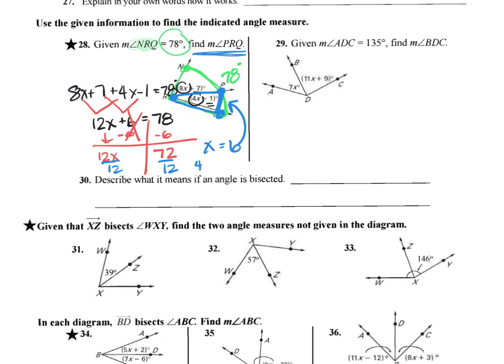So that makes 4 times 6 minus 1. Again, we're using this right here, 4x minus 1. And that calculation is going to be 24 minus 1, 23 degrees. The measure of angle PRQ equals 23 degrees. That is the answer to the question.